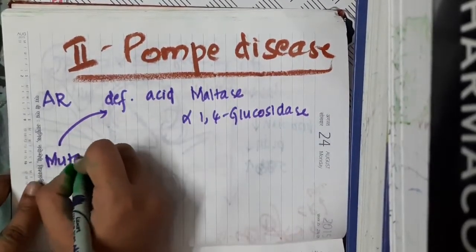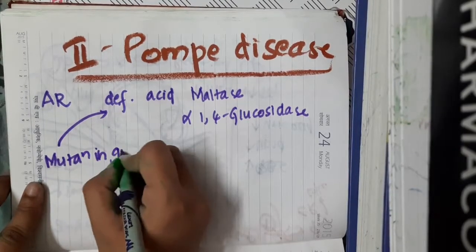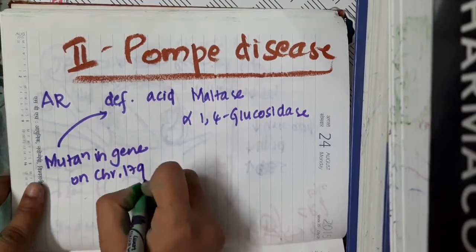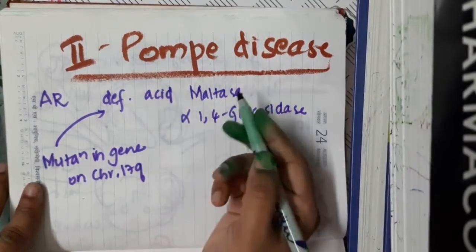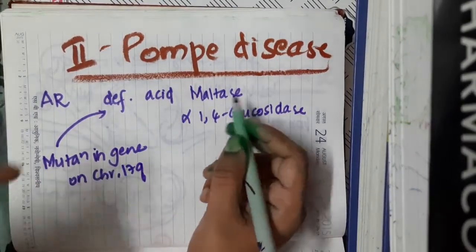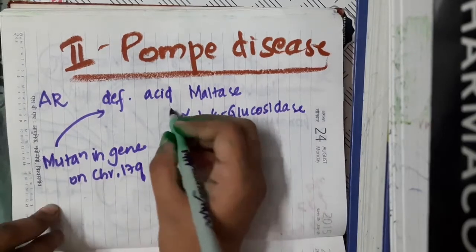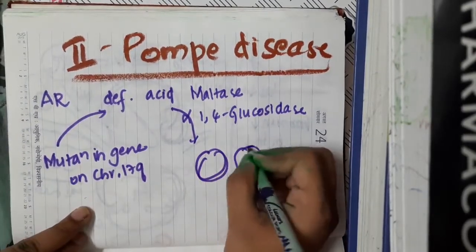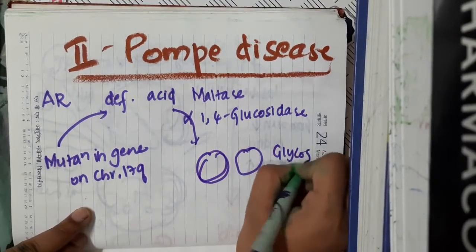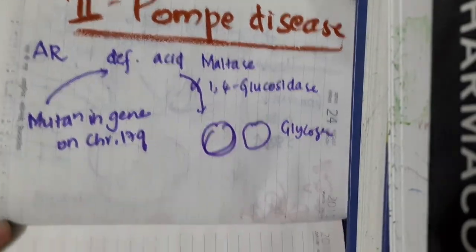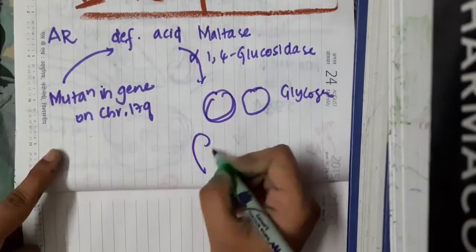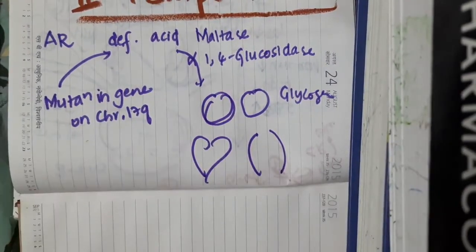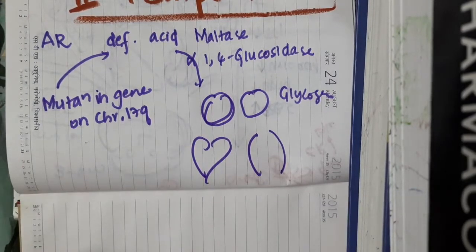Pompe disease occurs due to a mutation in the gene on chromosome 17Q, which codes for acid maltase. Because of the deficiency of acid maltase, there is accumulation of lysosomal glycogen in multiple tissues, especially in cardiac tissues, skeletal muscles, and smooth muscles.